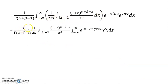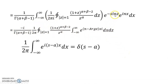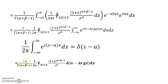We can write i as minus i, and x times ln z, taking common to get ln z equals arc z. This is the formula of the Dirac delta function: 1 over 2 pi times the integral from minus infinity to infinity of e to the power i(s minus a)x dx equals delta(s minus a). I just put values into the Dirac delta formula.